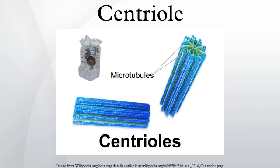Regarding ciliogenesis, in organisms with flagella and cilia, the position of these organelles is determined by the mother centriole, which becomes the basal body. An inability of cells to use centrioles to make functional cilia and flagella has been linked to a number of genetic and developmental diseases. In particular, the inability of centrioles to properly migrate prior to cilia reassembly has recently been linked to Meckel-Gruber syndrome.